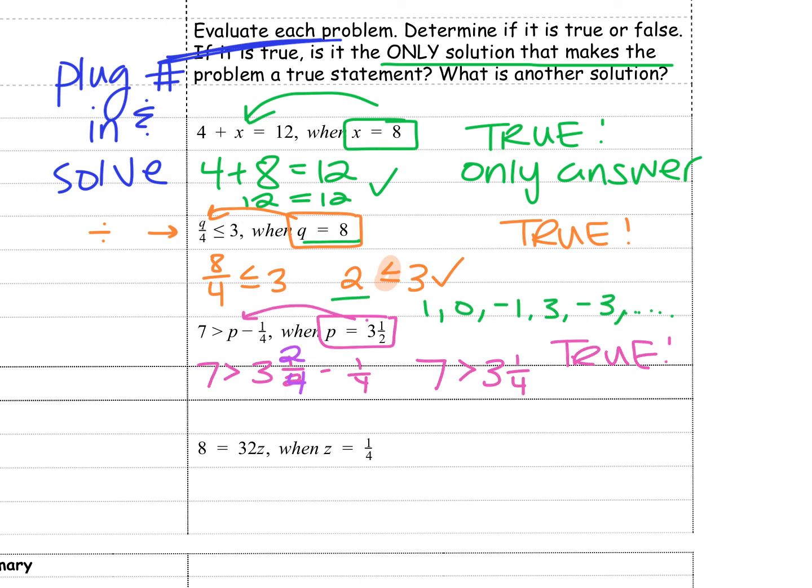And once again, because it's an inequality, because it's just saying it's greater than, we have a variety of answers. I could have had, instead of 3 and 1/4, I could have had 6, 5, 2, 0, 1, negative 1, negative 4, and so on. I could not have had 7 though, because 7 is not less than 7.